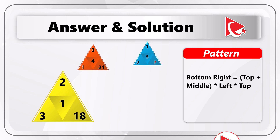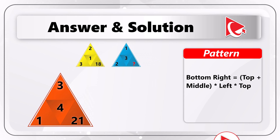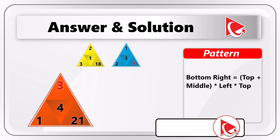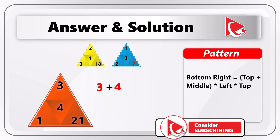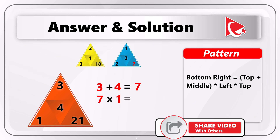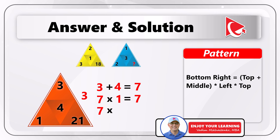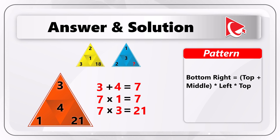Calculations for the second triangle would be very similar. 3 plus 4 equals 7. 7 multiplied by 1 equals 7. And 7 multiplied by 3 equals 21, which is precisely the number in the bottom right corner.